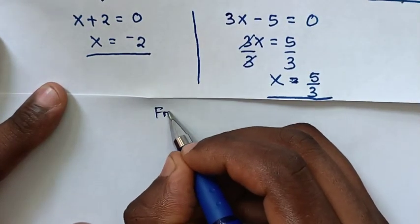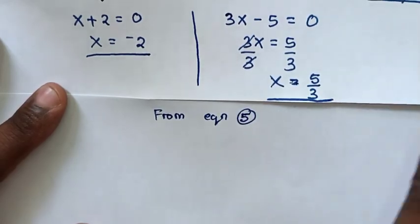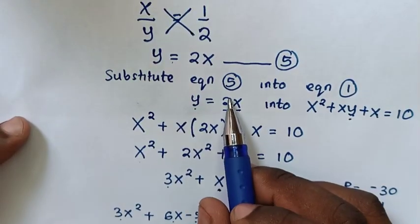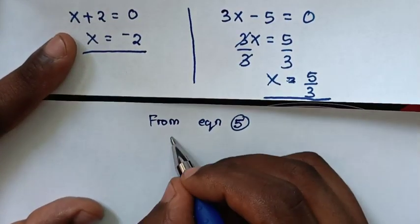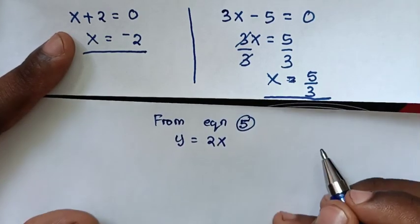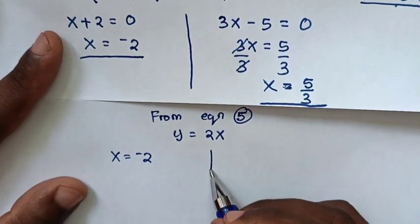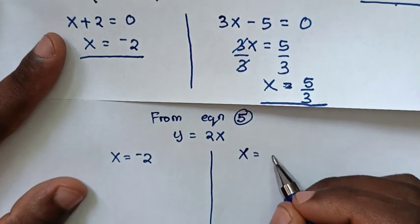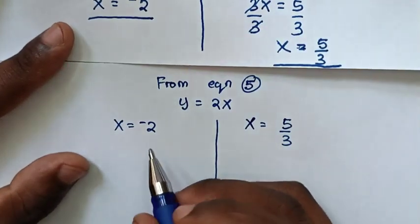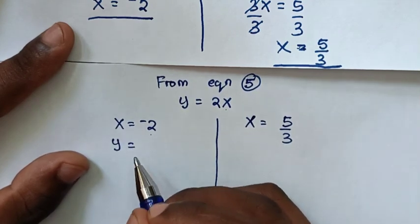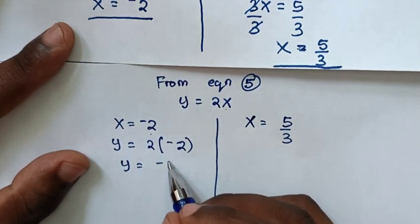In the next step, to find the value of y from equation 5, which is y is equal to 2x. So from y equals 2x, we substitute the value of x which is negative 2. So when we substitute x equals negative 2 into here, y is equal to 2 times negative 2. Then y is equal to negative 4.